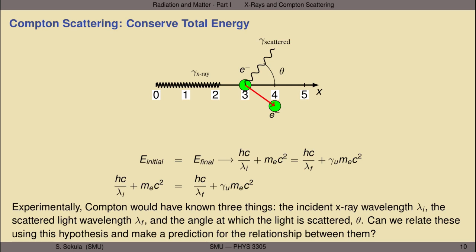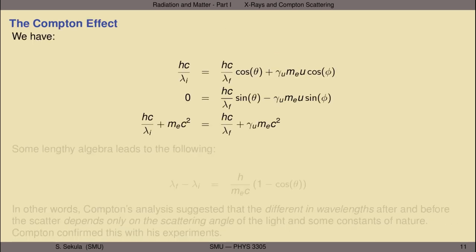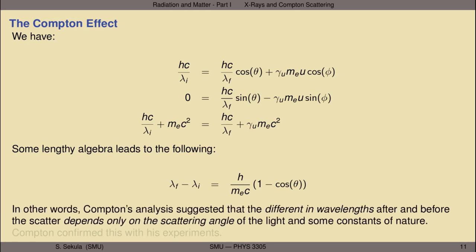The answer is yes. Working through all of the algebra, what Compton found is that the predicted relationship between final and initial wavelength and scattering angle is given by a very nice-looking equation: the difference in wavelengths after and before the scatter depends ONLY on the scattering angle of the light and constants of nature — h, the mass of the electron, and the speed of light. Compton confirmed this was a correct description by doing his own experiments and testing this idea.